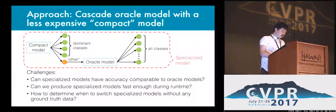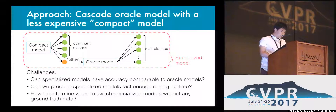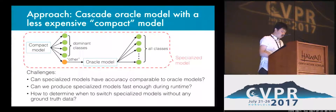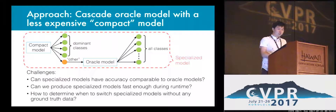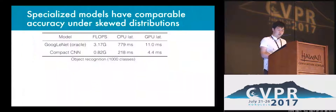Now, the big problem here is that we need to do all this online based on the video we are seeing right now. More specifically: are these online trained models accurate enough? Can we train them fast enough? How do we determine the dominant classes at runtime without ground truth? And when exactly should we produce a specialized model?